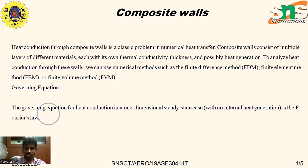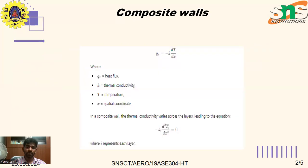The governing equation for heat conduction in a one-dimensional steady-state case using Fourier's Law is: q_x equals minus k times dT/dx, where k is the thermal conductivity, T is the temperature, and x is the spatial coordinate.